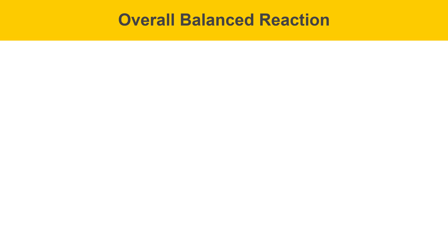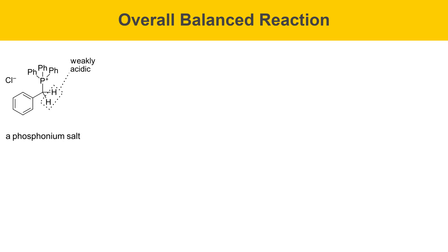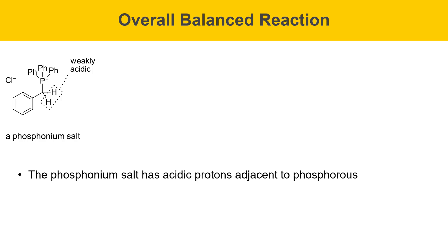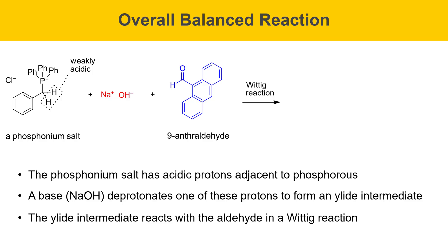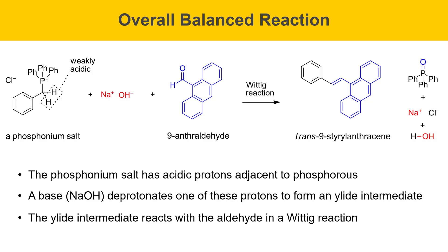On this slide, I'll talk about the overall balanced equation for the reaction today. It starts with a species known as a phosphonium salt — this is benzyltriphenylphosphonium chloride. The carbon next to the phosphorus has two weakly acidic protons. The phosphonium salt will be combined with one equivalent of sodium hydroxide, and this base deprotonates one of these protons to form an ylid intermediate. That ylid intermediate then reacts with an aldehyde in the Wittig reaction, producing an alkene called trans-9-styrylanthracene, along with co-products including triphenylphosphine oxide, sodium chloride, and water.